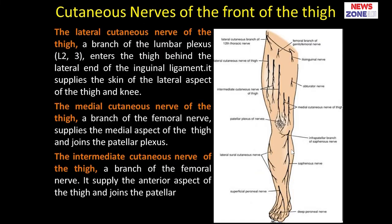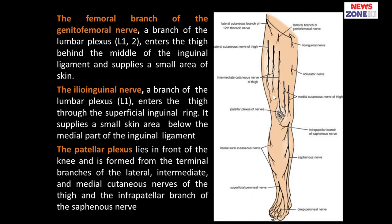Now let's start with the cutaneous nerve of the front of the thigh. The front of the thigh has mainly three cutaneous nerves: the lateral cutaneous nerve, the medial cutaneous nerve, and the intermediate cutaneous nerve. In this picture, you can see the medial cutaneous nerve, the intermediate cutaneous nerve, and the lateral cutaneous nerve. Also, the thigh is innervated by the femoral branch of the genitofemoral nerve, ilioinguinal nerve, and patellar plexus of nerves.